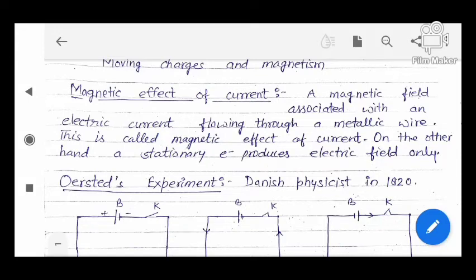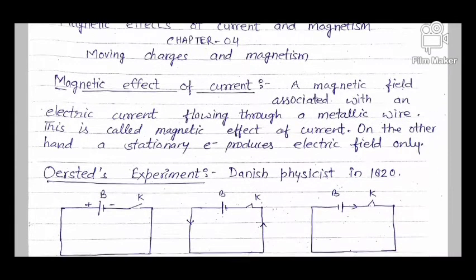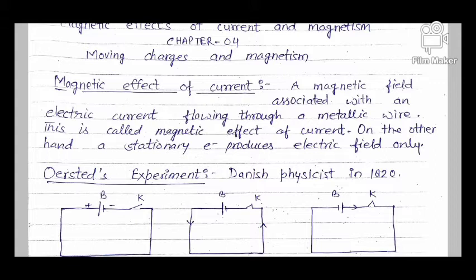Hello students, today we will start the next chapter: Moving Charges and Magnetism. In this chapter, we are studying about movable charged particles and magnetism — how a magnetic effect can be produced around a charged particle.